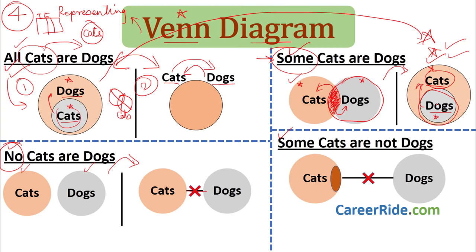For 'some cats are not dogs': draw the cat circle and draw a small dark community of cats. This small dark portion is not dogs. The rest of the cats may or may not be dogs — we do not know. But it is 100% guaranteed that this dark portion is not dogs. These are the basic Venn diagrams useful for solving syllogism possibility sums. If you understand this, you will be able to tackle possibility sums. For normal sums, use income expense method; for possibility sums, use Venn diagram.